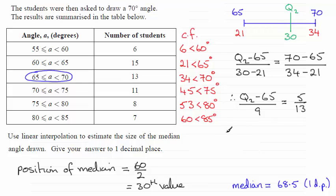And so rearranging this for Q2, we therefore have Q2 equals 9 times 5 thirteenths, and then plus the 65. And this comes out to be the decimal 68.46, and so on. So that when you round this to one decimal place, you get 68.5.